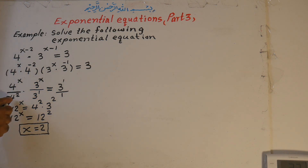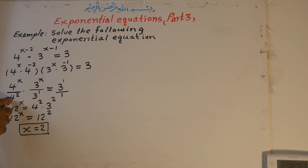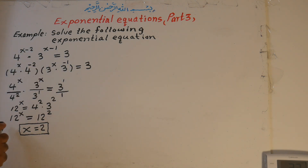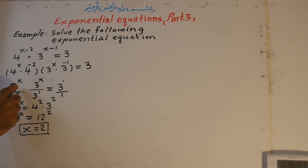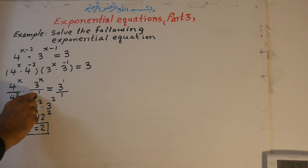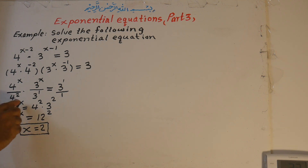Now, 4 to the power of x over 4 to the power of positive 2, times 3 to the power of x over 3 to the power of 1, is equal to 3 to the power of 1 over 1. We can cross-multiply these two because the exponent of both is x. 4 times 3 equals 12 to the power of x on the left side. On the right side, 4 to the power of 2 times 3 to the power of 1 gives 3 to the power of 2. So the right side becomes 12 to the power of 2, since 4 times 3 times 4 times 3 equals 12 to the power of 2.